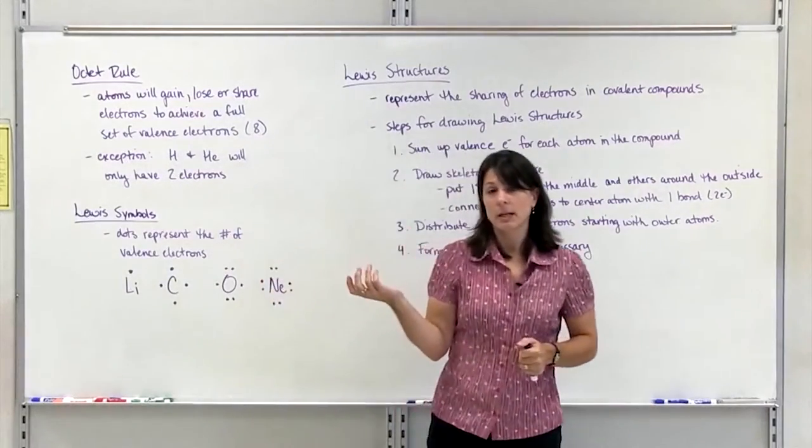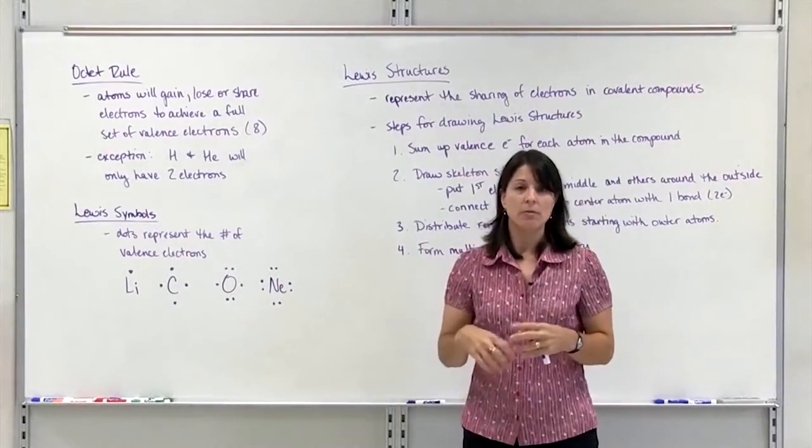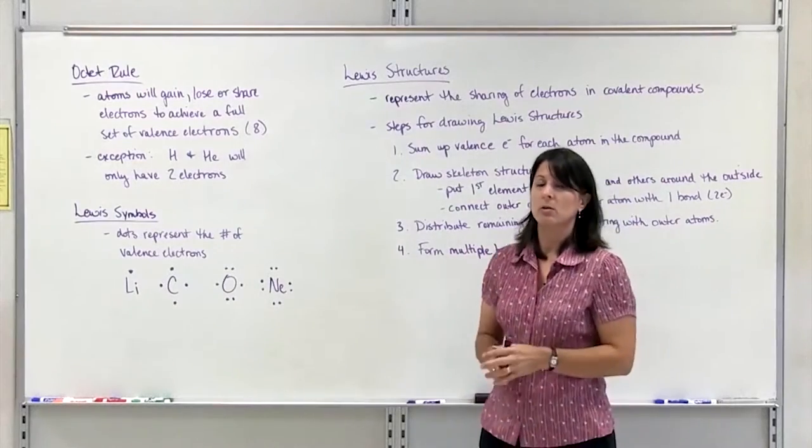Atoms on the periodic table will gain, lose, or share valence electrons so that they achieve a full set of valence electrons, which is 8.